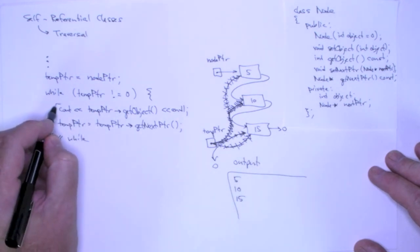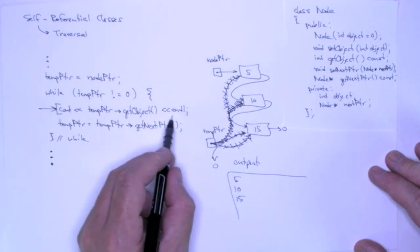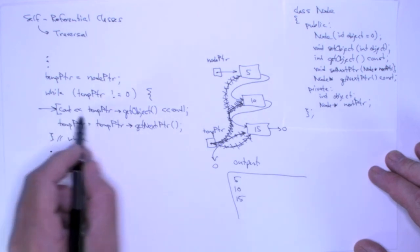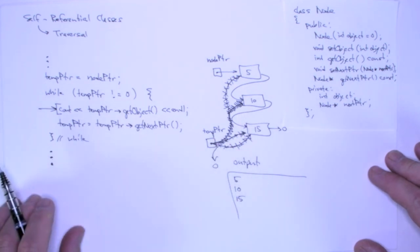And here is where the business happens. Whether we're printing, whether we're finding something, whether we're doing some calculation, that's going to happen right here before we advance the pointer to the next node in the chain. So this is a very important piece of code.